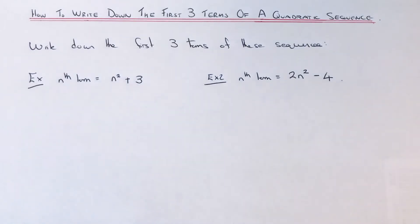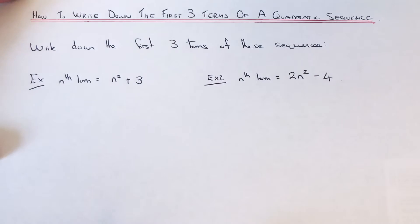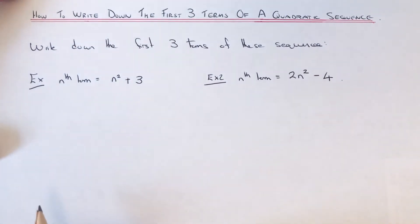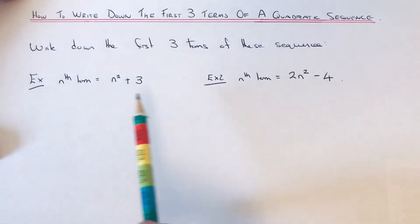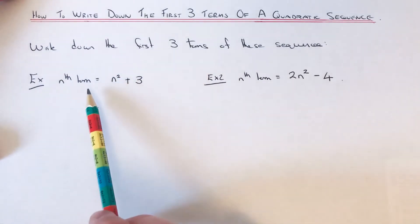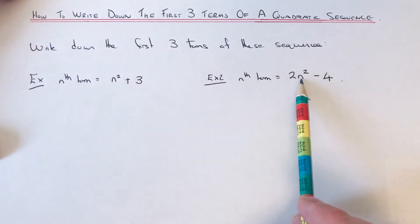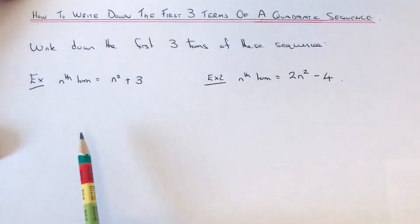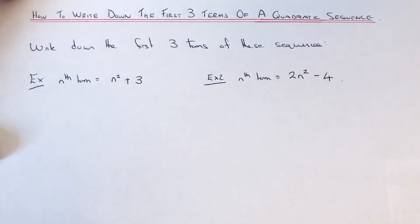Hi guys, welcome back. Today I'm going to show you how to work out the first three terms of a quadratic sequence. This is where you have an nth term formula where we have an n squared term. So let's have a look at the first example then.